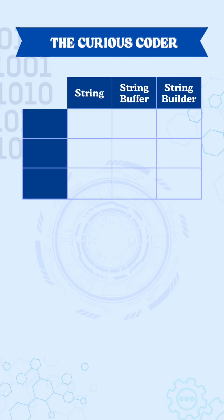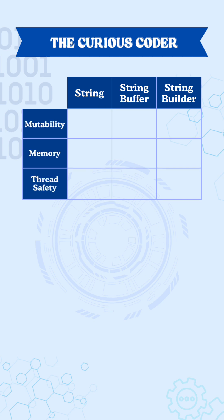Whenever we talk about String, StringBuffer, or StringBuilder, there are 3 major aspects that clearly differentiate them: mutability, memory, and thread safety.